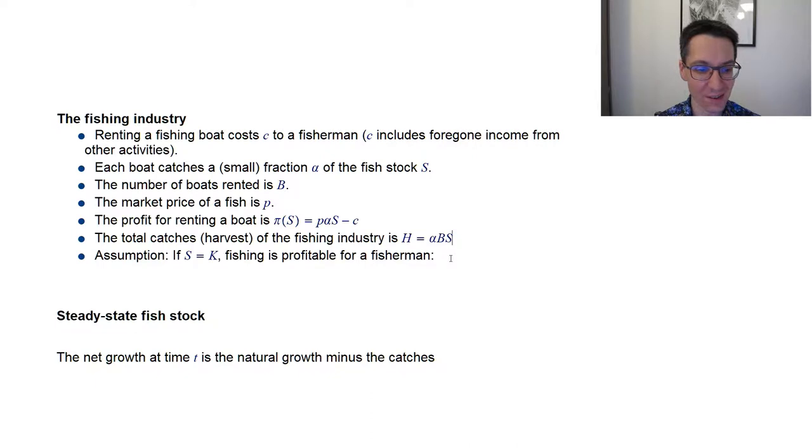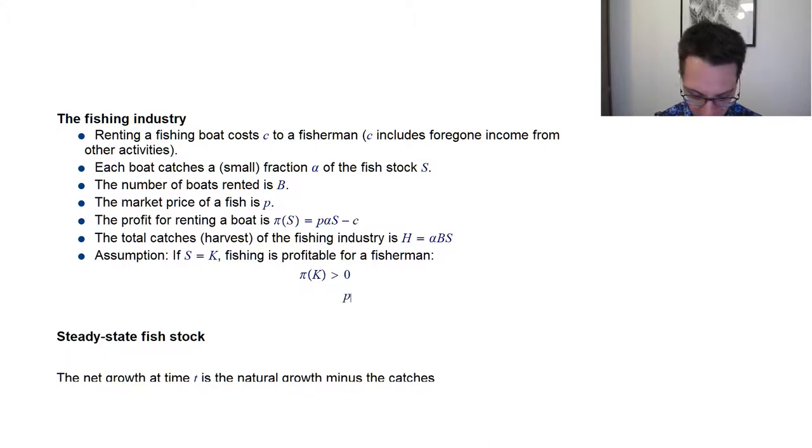Finally, we have to assume that if s equals K, so if there is the total number of fishes in the ocean, then fishing should at least be profitable for a fisherman. So what does that mean? Well, it means that the profit, if the stock of fish is K, should be larger than zero. So that means that p·α·K minus C should be larger than zero. Otherwise, I don't have any model. Otherwise, nobody wants to fish. And of course, K can be smaller. So it's possible that at some point, the profit is too low and then people don't want to fish anymore.